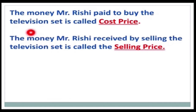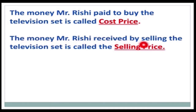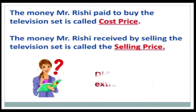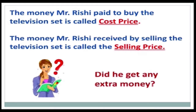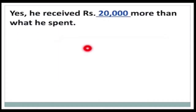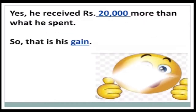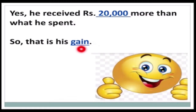The money Mr. Rishi paid to buy the television set is called cost price, and the money Mr. Rishi received by selling the television set is called the selling price. Did he get any extra money? Yes — he received rupees 20,000 more than what he spent, so that is his gain.